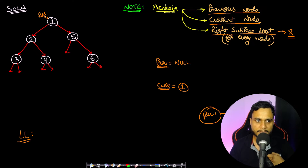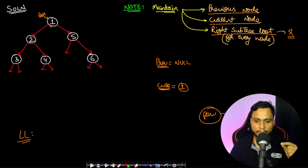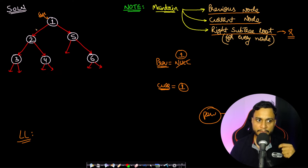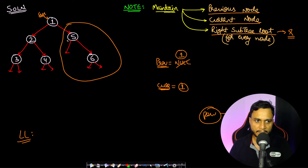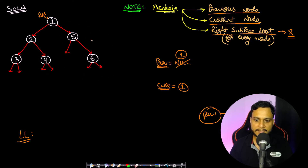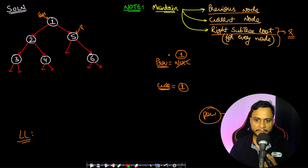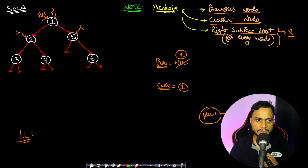When moving to node 2, first update previous to the current value (1). Before moving, we must save the right subtree using the R pointer — R points to current's right child (5). This is necessary because if we go into the left subtree and modify the right pointer, we need to be able to come back and process the right subtree. Now previous is 1, current was 1, and R points to 5.